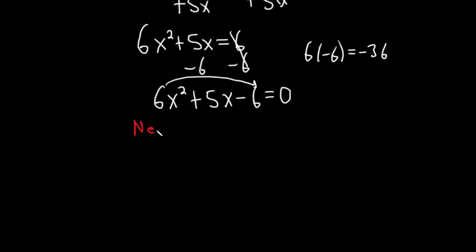We need two numbers. First condition is that they multiply to negative 36. And the second condition is that they add to the middle number here, which is 5. And this is always the process here. So we need two numbers that multiply to this number here and add to 5.